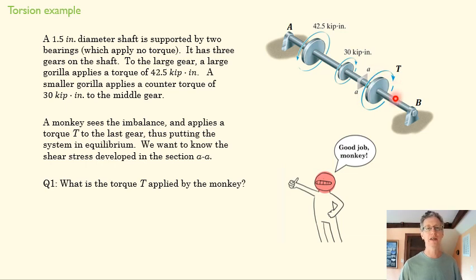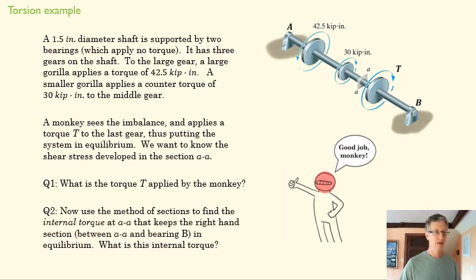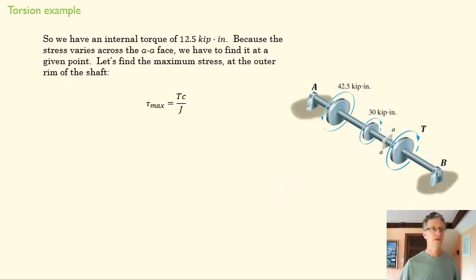And we'll move on. And so the little monkey is helping our small gorilla by adding a little 12.5 kip-inch torque. Now we want to use the method of sections to find the internal torque at section A. And so you'll want to use the same kind of process that we've used to find internal moments up until now. What's our internal moment at A? So now we know that we have an internal torque of 12.5 in here, and hopefully you figured that out. If we make a section here and just look over here, there's no torque applied here. So that torque has to be balanced by the internal torque here in order to keep this section static.